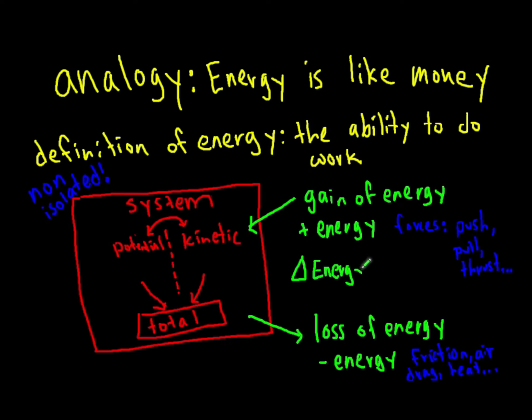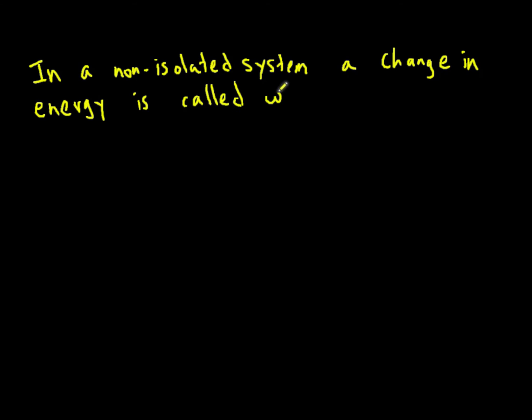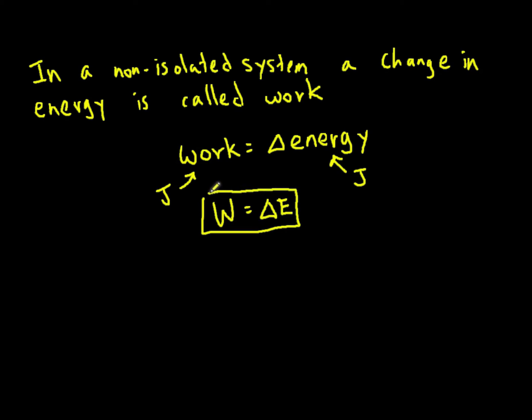This change in energy in a non-isolated system is referred to as work. And so when we say energy is the ability to do work, what we really mean is energy is the ability to change energy. In a non-isolated system, a change in energy is called work. Or work is equal to delta energy. Delta, the little triangle there, means change in. Work is measured in joules, and energy is measured in joules, because work is just another kind of energy. And the formula we use is work equals delta E.